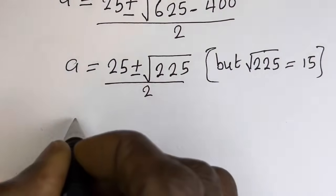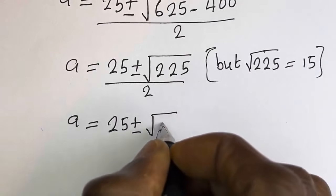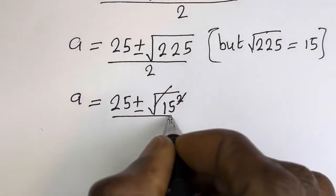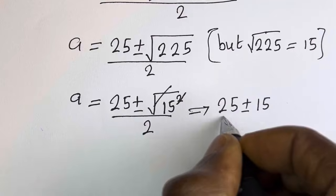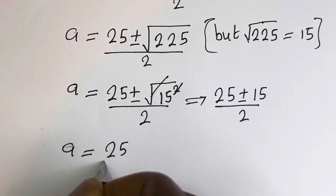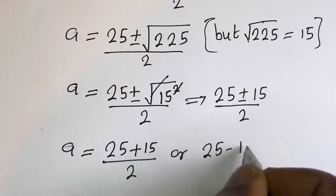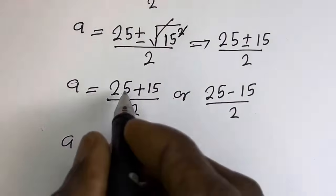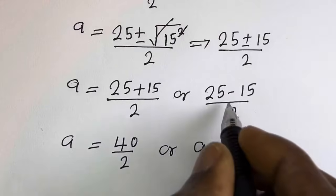Then this can be written as A is equal to 25 plus or minus 15, divided by 2. So A is equal to 25 plus 15, that is 40 divided by 2. Or A is equal to 25 minus 15, that is 10 divided by 2.